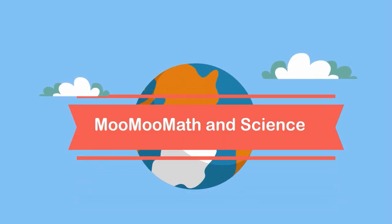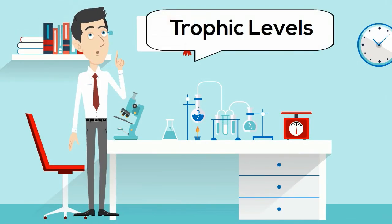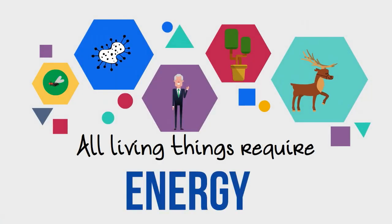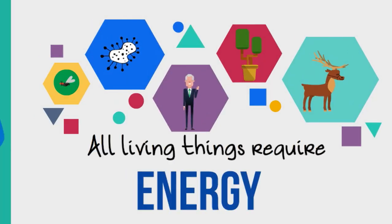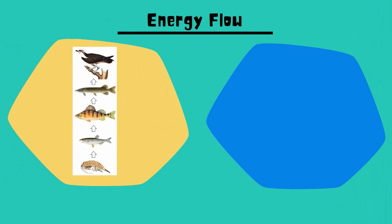Welcome to MooMooMath and Science. In this video I would like to talk about different trophic levels. All living things require energy in order to stay alive, and there are different models used to show the flow of energy through an ecosystem. The most common models are food chains and food webs.